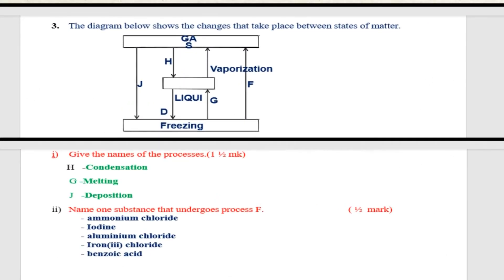You are told question number one: give the names of the processes. H is where we have gas changing to liquid. That process is condensation. Then we have G, where we have ice changing to liquid, that is melting.